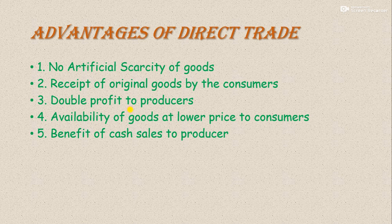Third advantage: double profit to producers. Producer ko double profit hota hai. Ek toh woh production ka benefit uthate hain — large scale par production karte hain aur unko economies of scale ka level achha hota hai, yaani unki per unit cost kam ho jaati hai. Doosra, beech mein middleman na hone ki wajah se, woh consumer se direct profit le rahe hain. To unko double benefit milta hai.